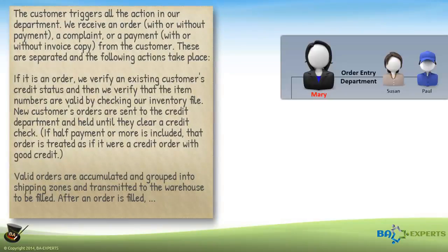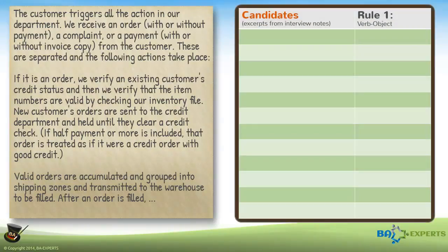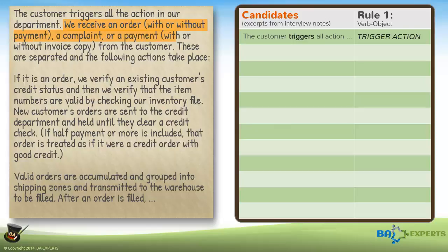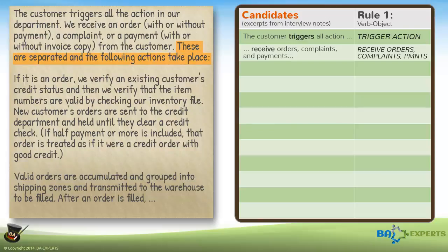I'll read through the interview notes from Mary, Manager of Order Entry Department, to demonstrate how we identify potential actions. 'The customer triggers all the action in our department.' Trigger action is an active verb with a direct object, so I jot it down as a likely candidate. Reading on, 'we receive an order, with or without payment, a complaint, or a payment with or without invoice copy, from the customer.' Receive is certainly an action, so I add Receive Orders, Complaints, and Payments to my list of potential processes. 'These are separated, and the following actions take place.' Are Separated is the passive form of the active verb to separate. I suggest Separate Orders, Complaints, and Payments, but that just repeats what they received and Paul explains that they call it Sort Mail — that's short and says it all, so I add that to my list.